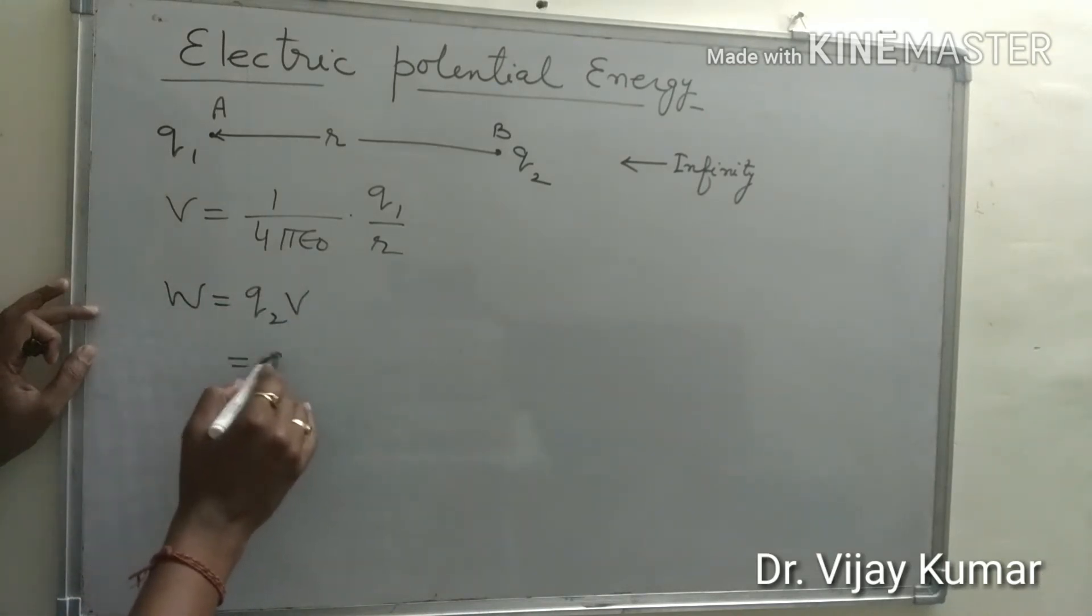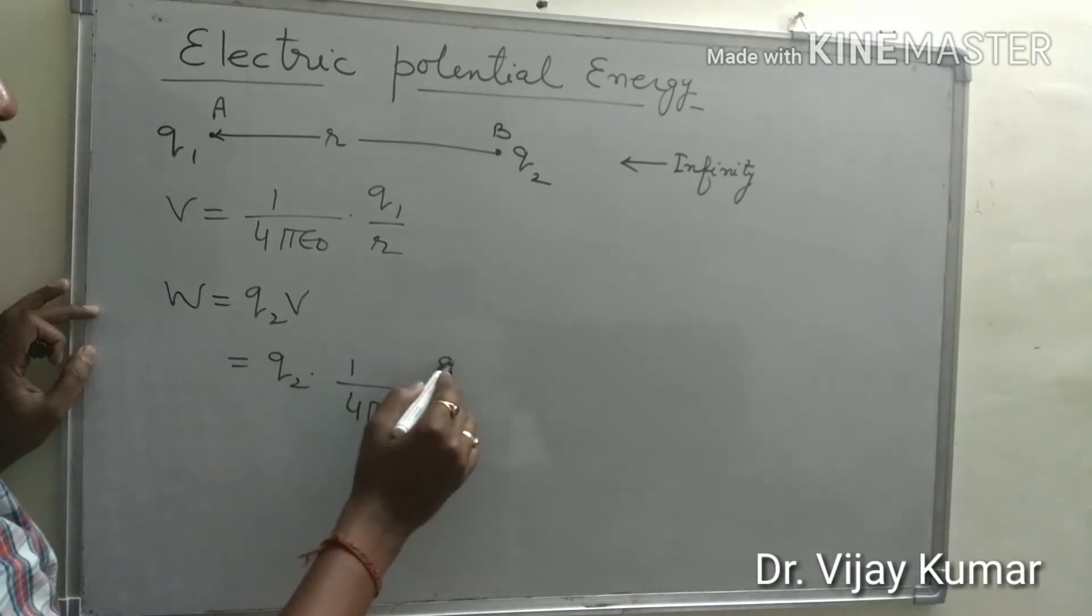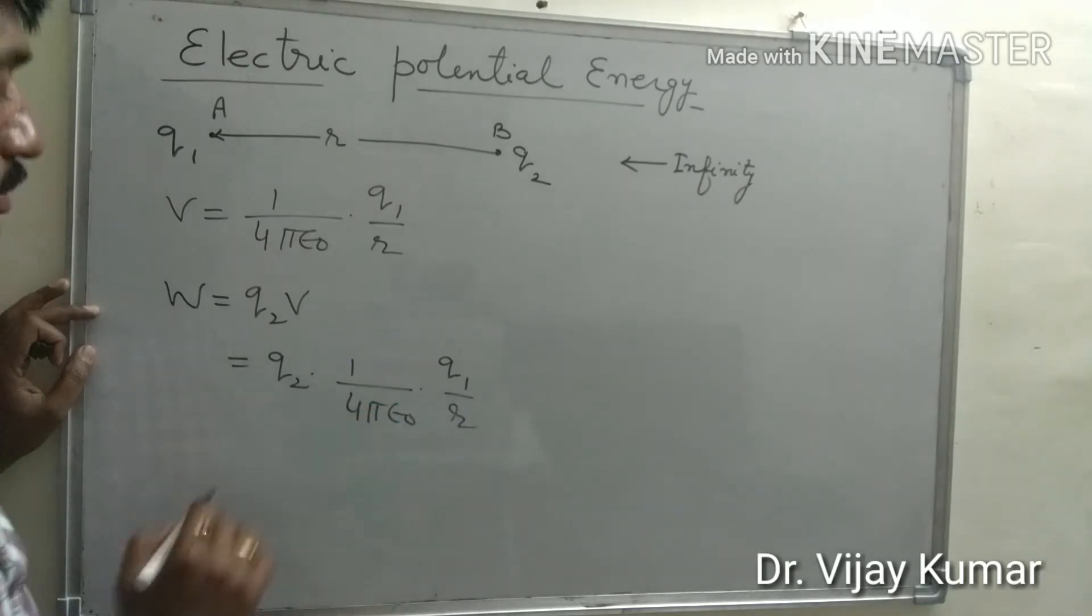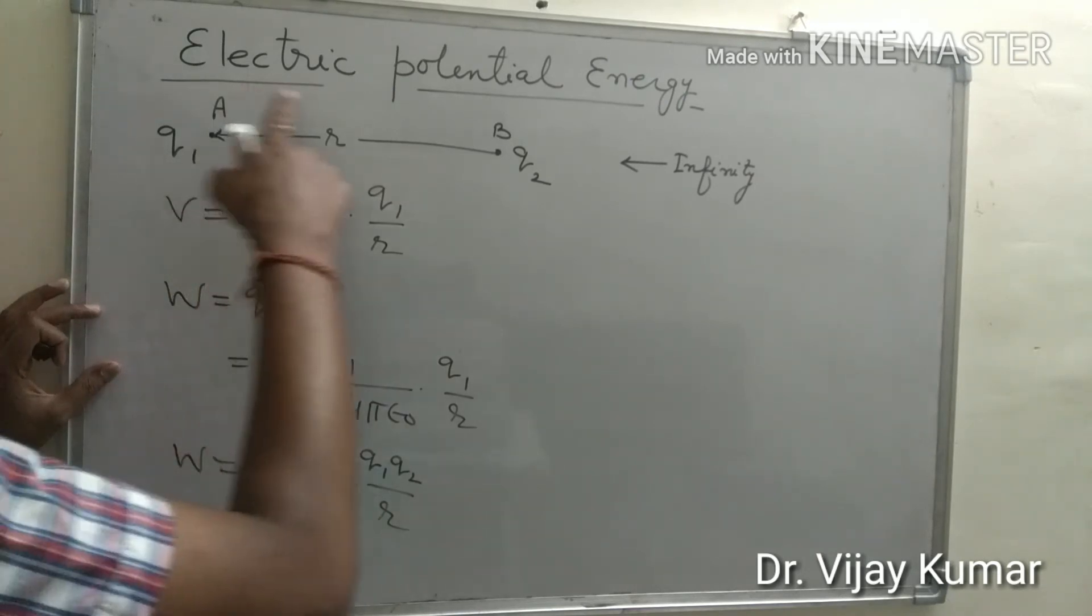Put the value of V, 1 upon 4π epsilon naught Q1 upon R, and that work done becomes 1 upon 4π epsilon naught Q1 Q2 upon R.